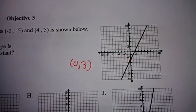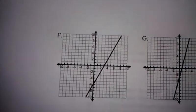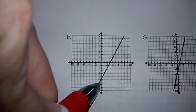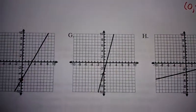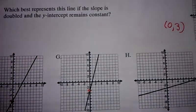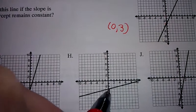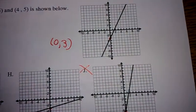It says that the y-intercept remains constant. So let's look and see. Let's see here A, well that's down here at 5, that's not the right answer. Right here on the next one it is at 3, so that could be it. This one it is at 3, this one here is not, that's not it.